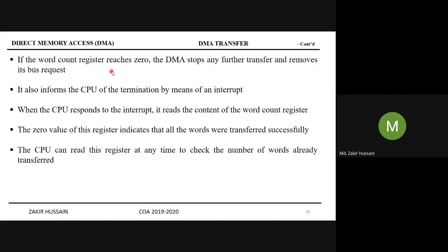For example, if 64 words need to be transferred, that count is loaded into the word count register. When the word count register reaches zero, it means the peripheral has completed its transfer. At that point the DMA releases bus control — bus grant BG becomes 0, and control returns to the CPU.